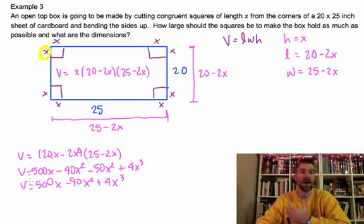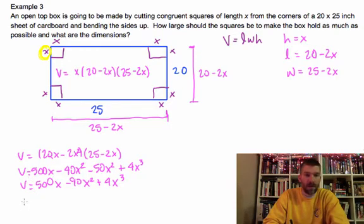In order to find the max volume of this thing, I need to now find the derivative. So, V' equals 500 minus 180x plus 12x squared.